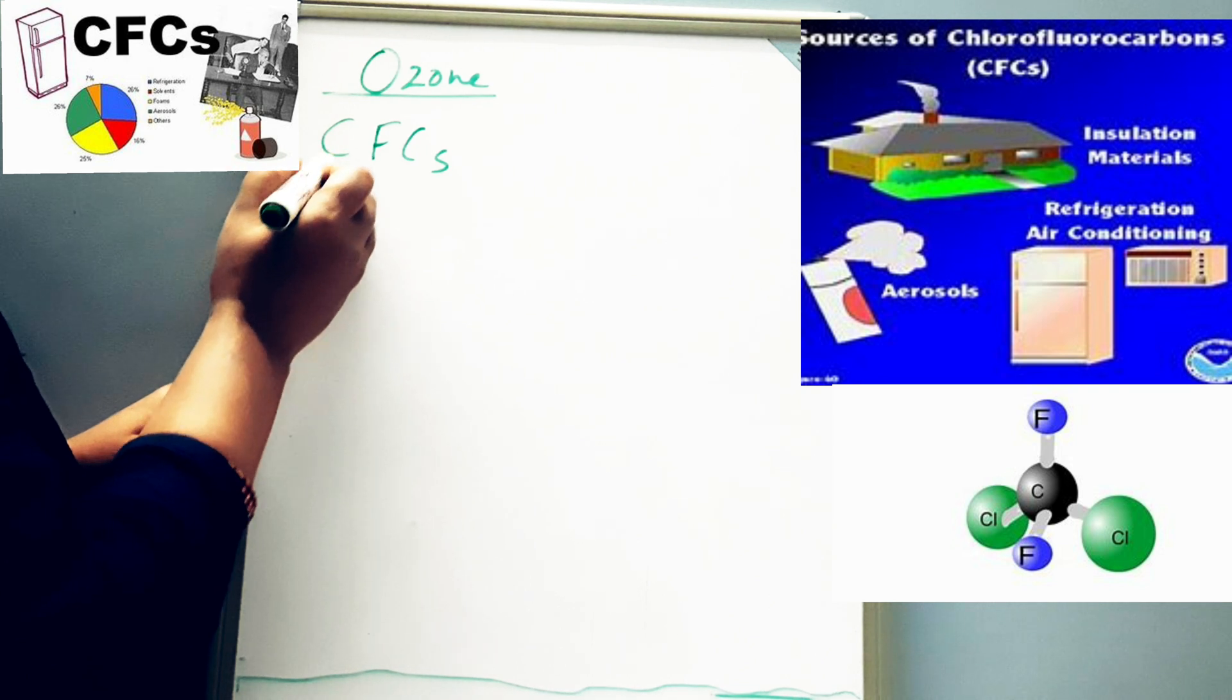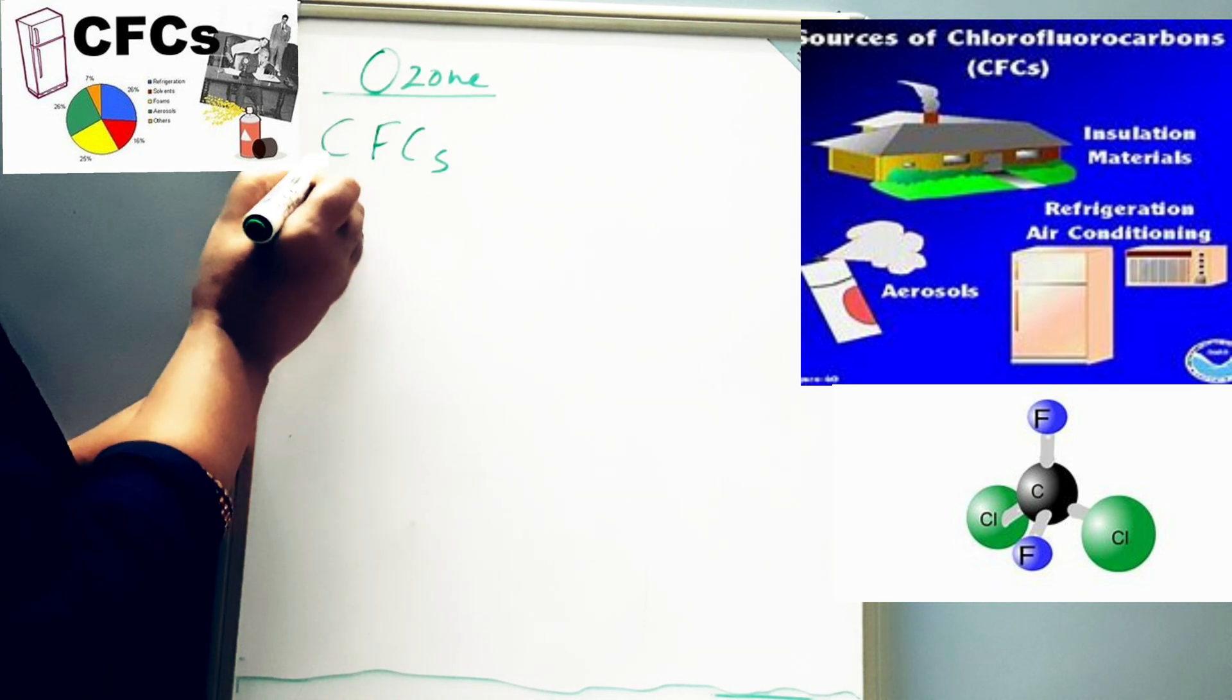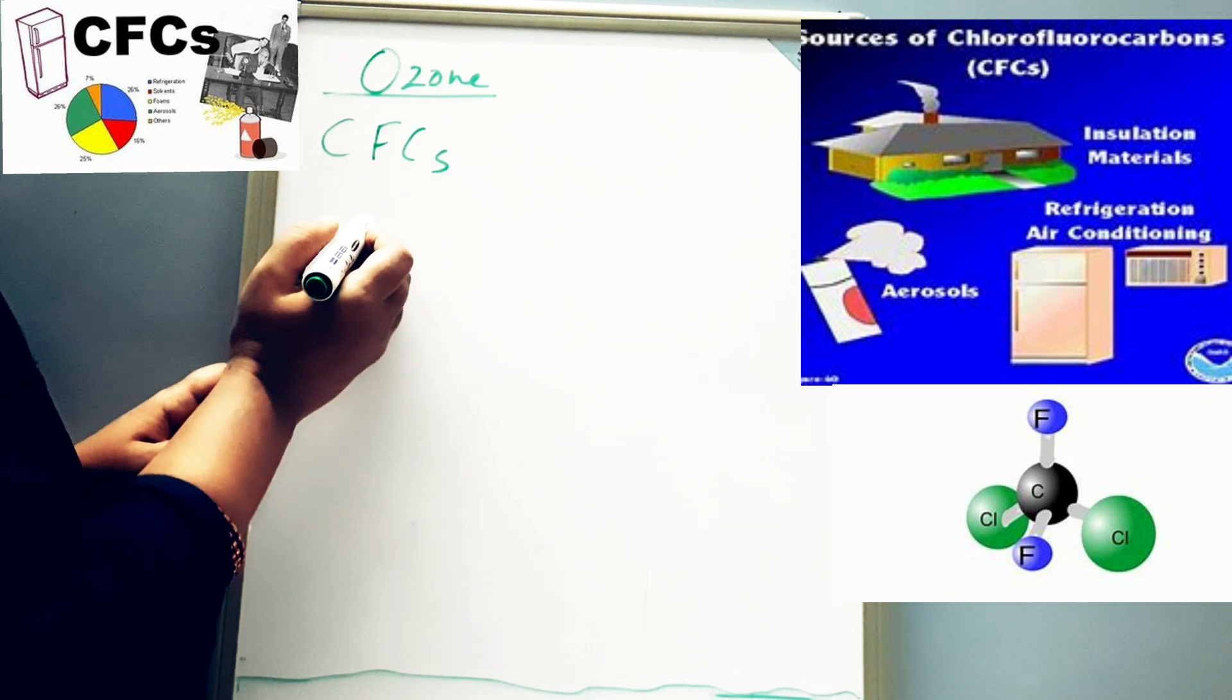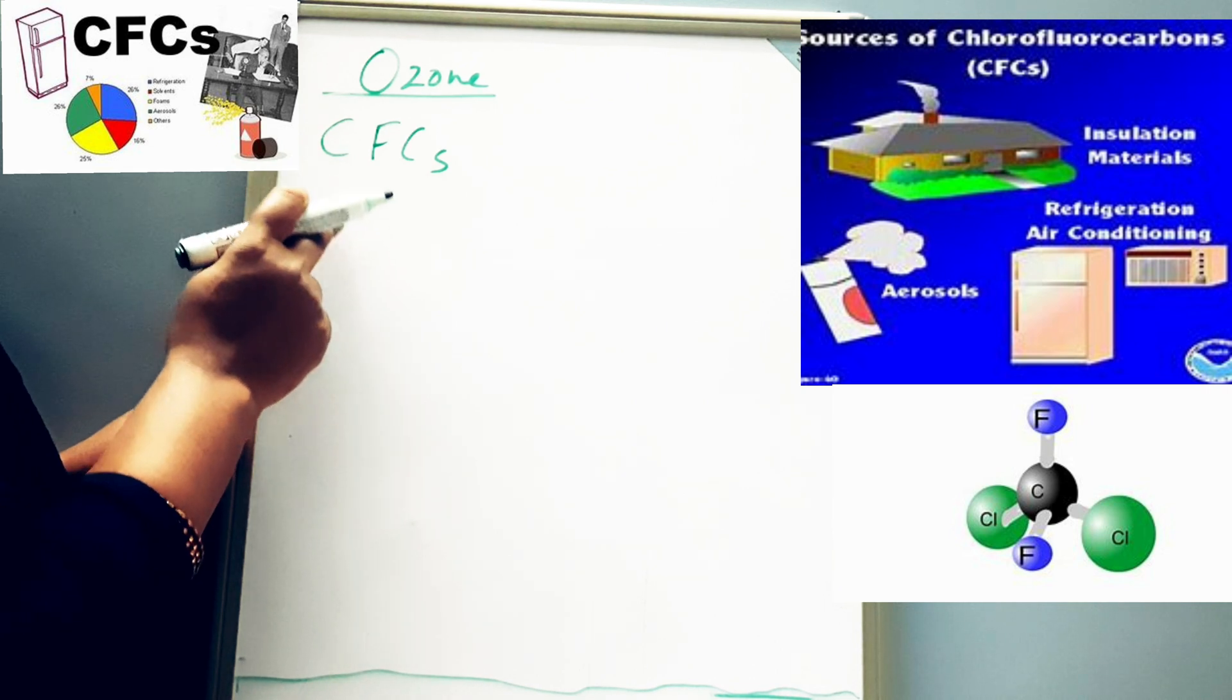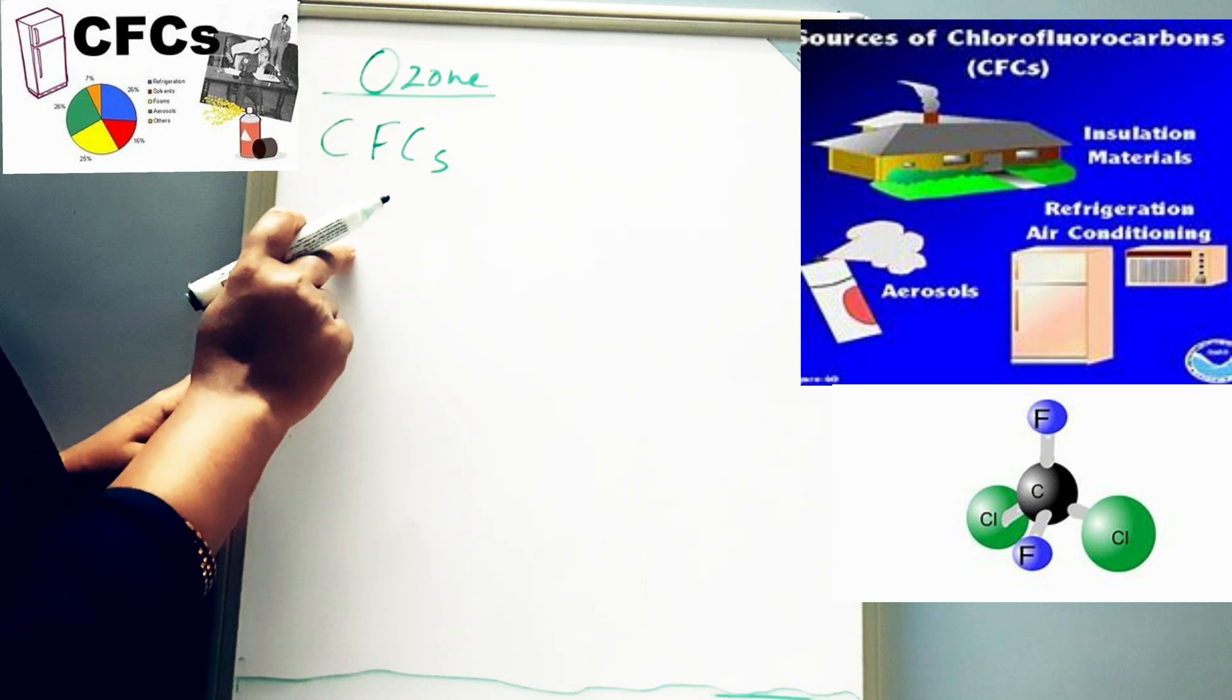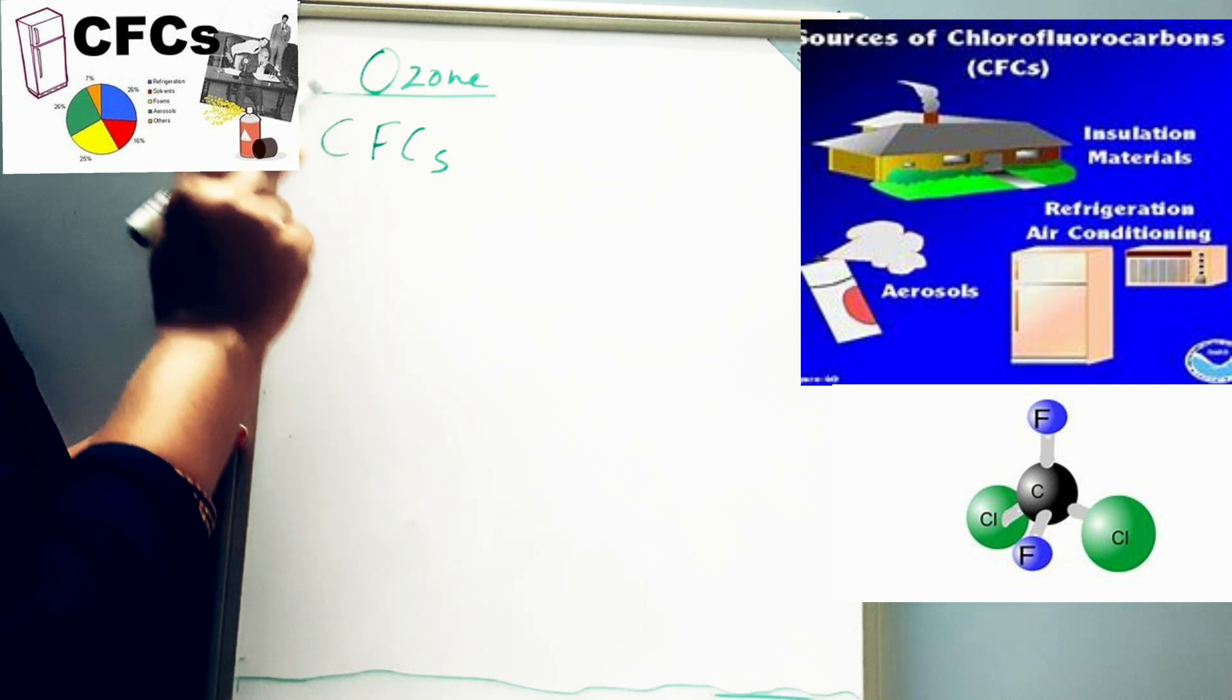CFC - the full form of CFC is chlorofluorocarbon. So as per the name, chlorine is present in it, and this chlorine is dangerous for ozone. The sources of CFCs are plastic manufacturing industries, cooling systems, refrigeration fluids, and aerosol sprays. From all these sources, CFCs reach the stratosphere, and there with the help of UV rays it reacts with ozone and destroys it.